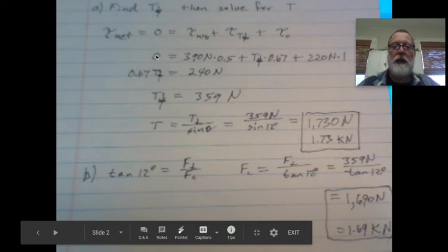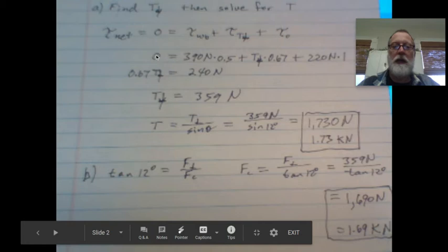So right here we have it again. This is where I was on the previous slide. So zero equals negative 390 times 0.5 plus T perpendicular times 0.67 minus, because this is clockwise torque again, 220 newtons times one.